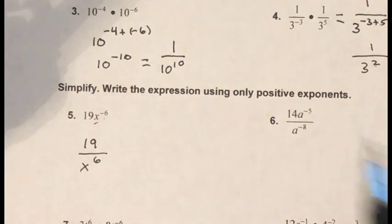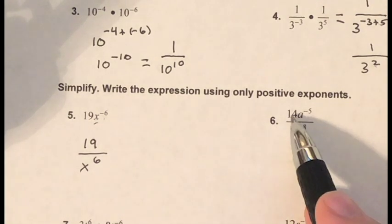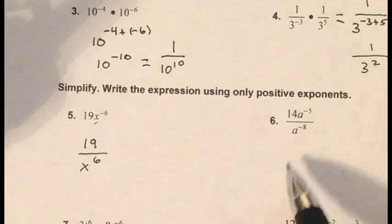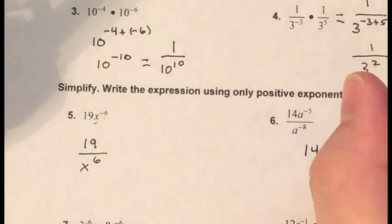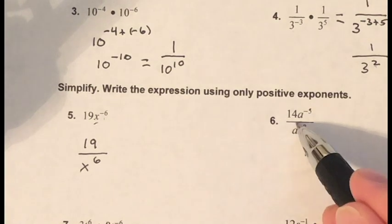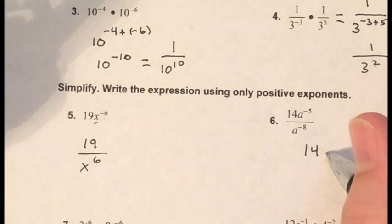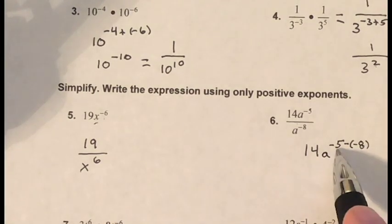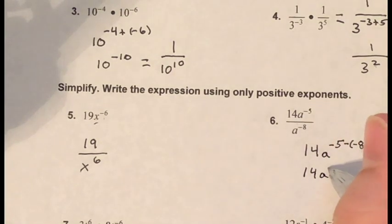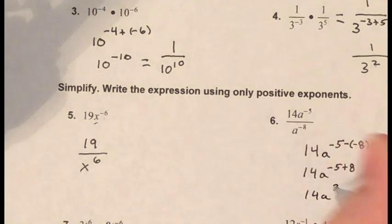Problem six: 14 times a to the negative fifth divided by a to the negative eight. The 14 is not affected by the exponents, so it stays. I subtract the exponents since I'm dividing: negative five minus negative eight equals negative five plus positive eight, which is three. So the result is 14 times a to the third power.